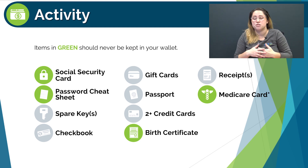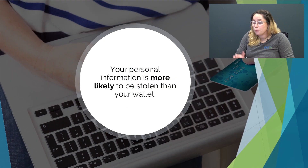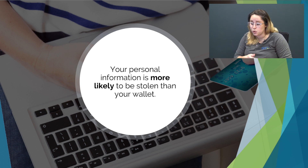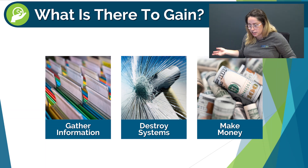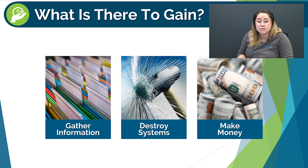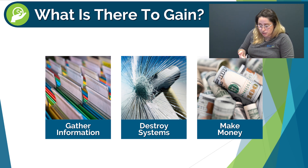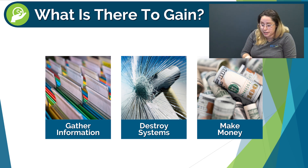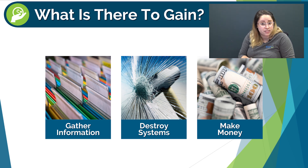So you may be wondering, why are we focusing so heavily on physical items when this is a cybersecurity basics presentation? Well, your personal information is more likely to be stolen than your wallet. It's incredibly important to take the same care, if not more, to protect your personal information as you already do to protect your physical items. So why do cybercriminals go to such lengths to steal our information and or breach our systems? Some cyberattacks include a string of deception to obtain personal information, using newly obtained personal information to gather even more, and so on. Ultimately, gathering information leads to a cybercriminal destroying a system and or earning money through selling information on the dark web.